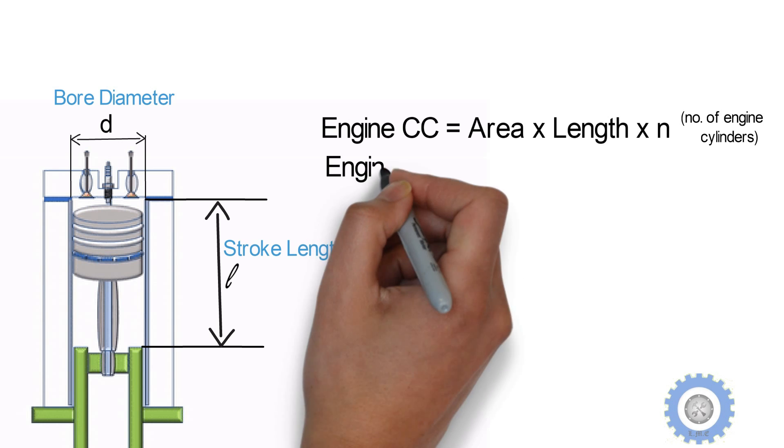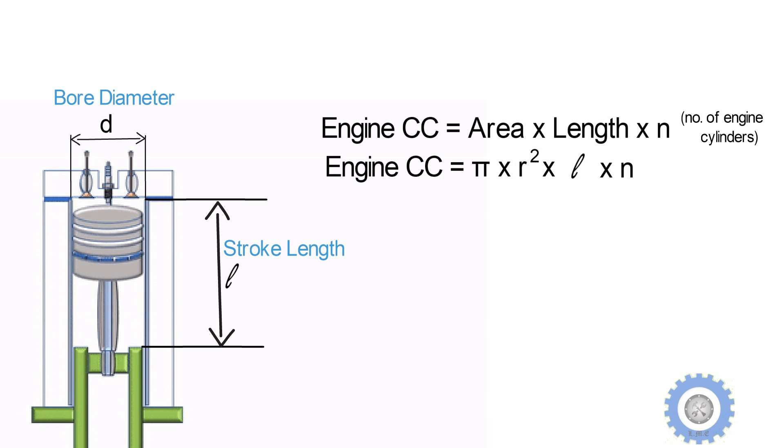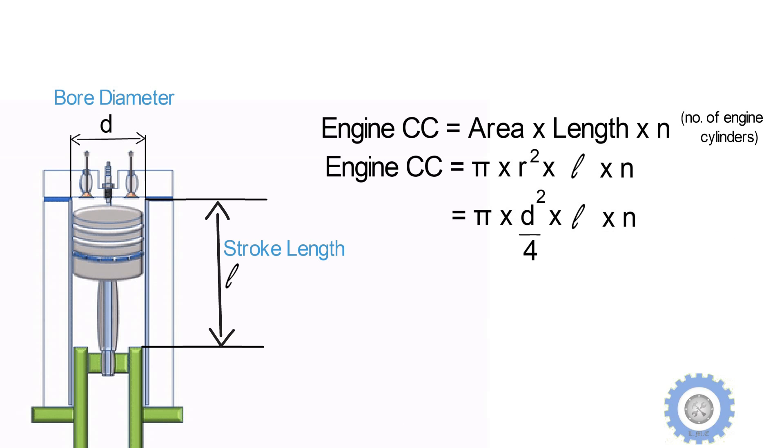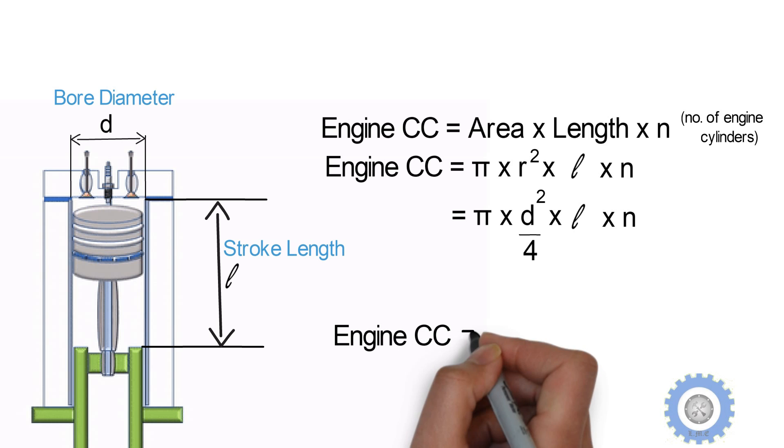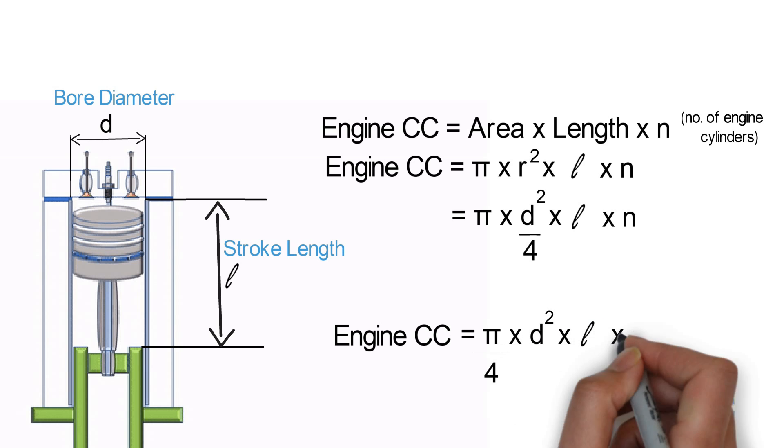As you know, the area of a cylinder is π r squared, and we want it in terms of bore diameter. So we convert radius to diameter. We know that diameter is 2 times radius. With simple math, we know that r is d by 2, then we get π by 4 into d squared into n.